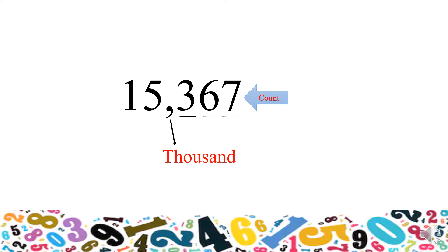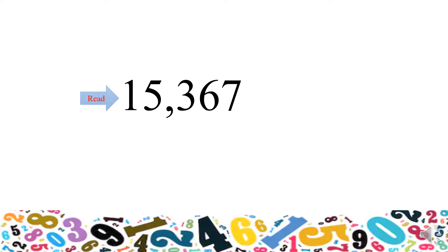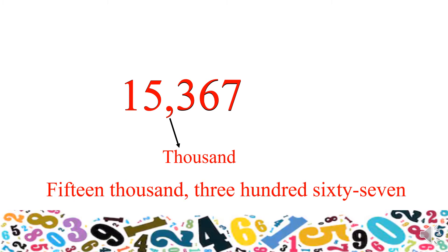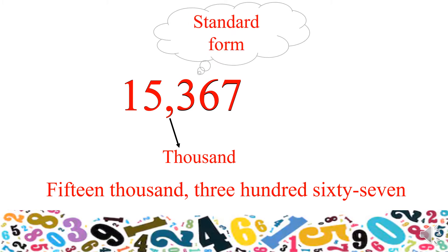Remember — the first comma is for thousand. Now we have to read this number from the left side. I will read the number before the comma as it is. What is this number? Fifteen. Then the comma for thousand — fifteen thousand, three hundred sixty-seven.